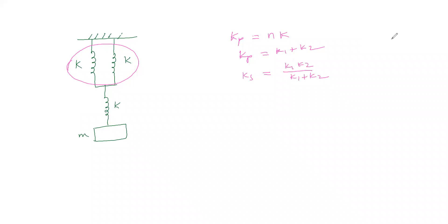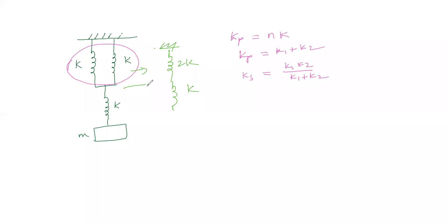These two springs are first connected in parallel. In parallel combination, the effective spring constant is 2k. When we replace these two springs with a single spring of 2k, there is one more spring k remaining. Now this simplified diagram shows two springs — 2k and k — and we check which combination they are in. They are in series combination.